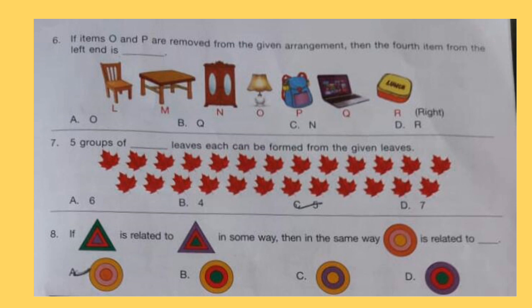Question 7: Five groups of dash leaves each can be formed from the given leaves.